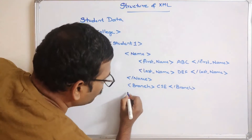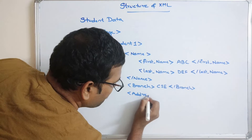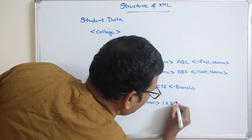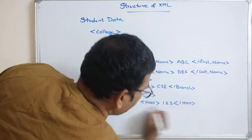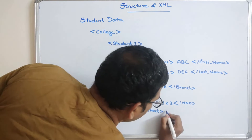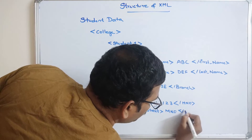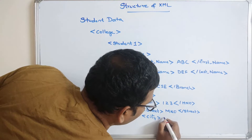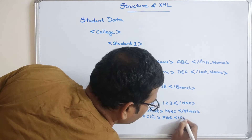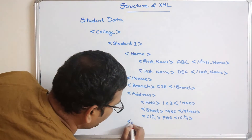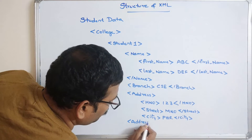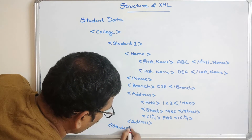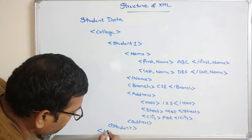Then we write the address element. Inside address, we have house number (e.g., 123), street (e.g., MNO), and city (e.g., PQR), each with opening and closing tags. After closing address, we close the student tag, and then close the college tag.